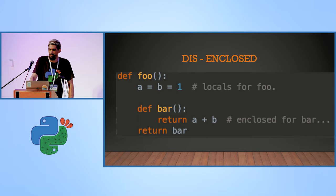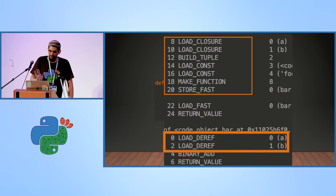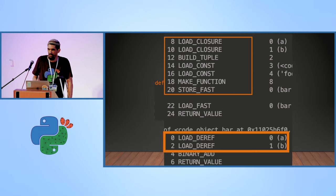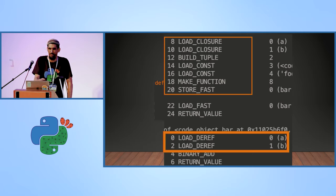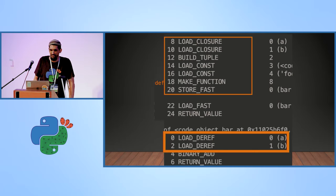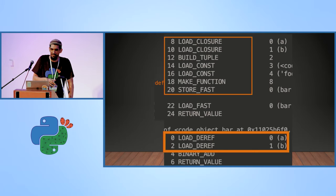The enclosed scope is a bit more tricky, as we explained. When the bar function is created, we do a load — we are creating a closure for it, and the closure holds the pointers to the cells that it's going to need. You can see A and B in the load_closure, and you can see make_function. Inside bar, you can see the load_deref instruction, which means don't go to the local array — go to the cells that are in your closures and look there for the variables.